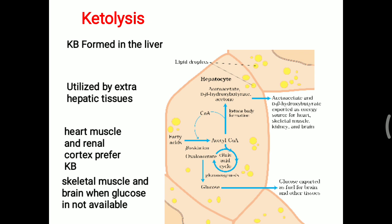Ketone bodies are produced inside the liver mitochondria because acetyl-CoA is not metabolized in the TCA cycle. Oxaloacetate, which is needed for the TCA cycle, is not available because it's diverted to gluconeogenesis. Therefore, acetyl-CoA is diverted to ketone body formation.